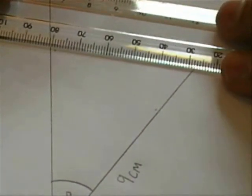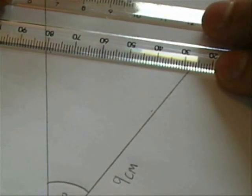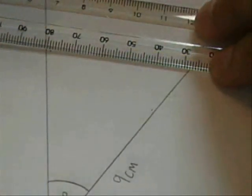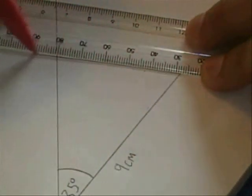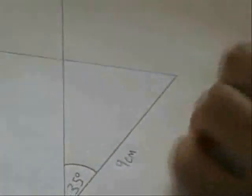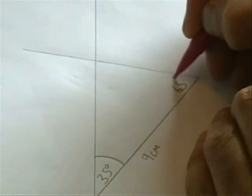And again, joining the base, making sure that it goes through my mark and extending the line to complete the triangle. I will label this as 65 degrees.